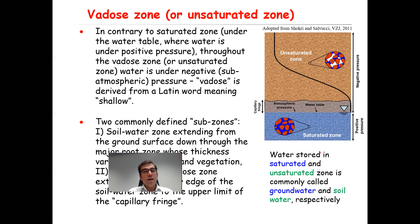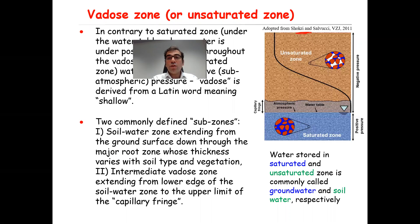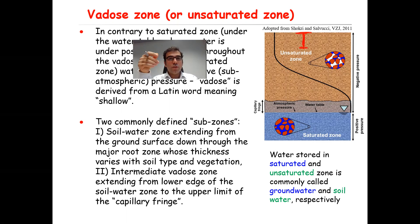Vadose is derived from a Latin word meaning shallow. Some textbooks define two sub-zones here. One is called the soil water zone, which extends from the surface of the soil down through the major root zone. Note that the root zone varies depending on the type of soil as well as the vegetation.